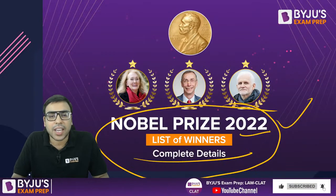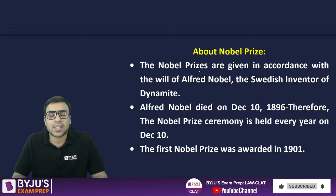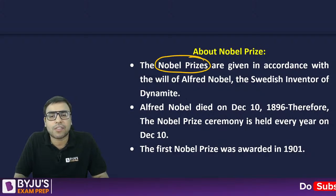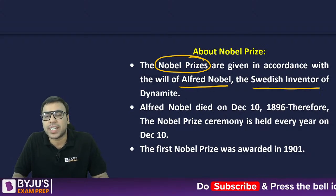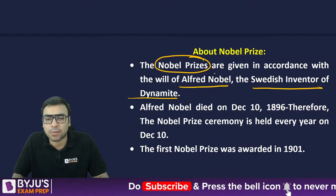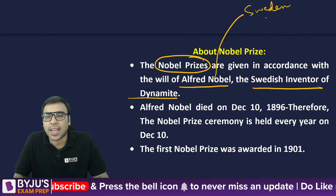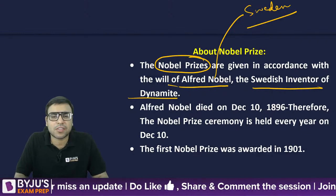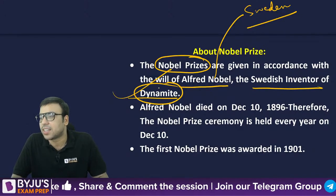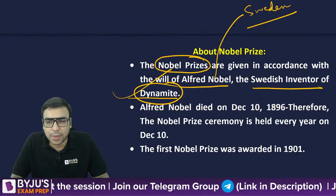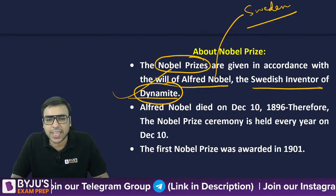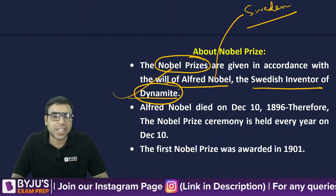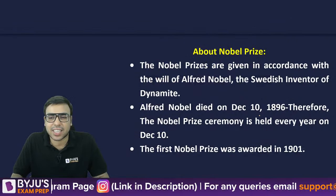Let's start with the Nobel Prize. Alfred Nobel was a Swedish inventor of dynamite — a scientist famous for discovering dynamite. He was from Sweden, and the Nobel Prize is given in his name.